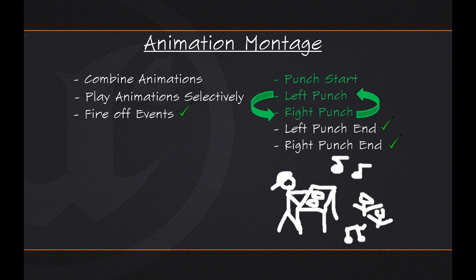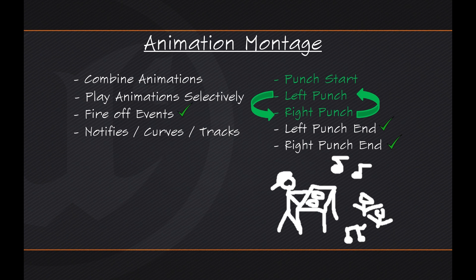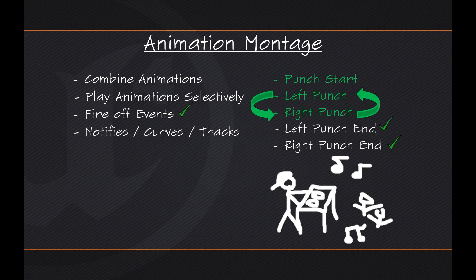There are some other things that Montages can do as well that we are not going to be exploring in this video series. It has its own set of Notifies, Curves, and Tracks. Notifies we will get into a little bit later — that is what we used for the particle effect that appears when running around, as you saw in the intro video to this series. But Curves and Tracks, which can be used for Layer and Additive Animations, is a bit outside of our scope, so we will not be exploring that in this series. Maybe we will save that for another video down the road.